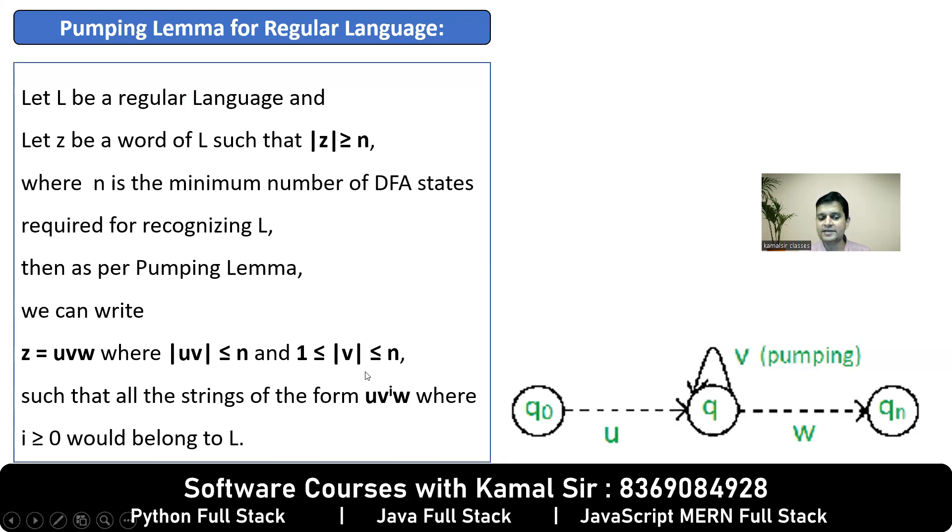Some conditions are given such that all the strings of the form u v^i w would belong to L. That means your Z will follow this pattern and according to this pattern, the string obtained will belong to the language.